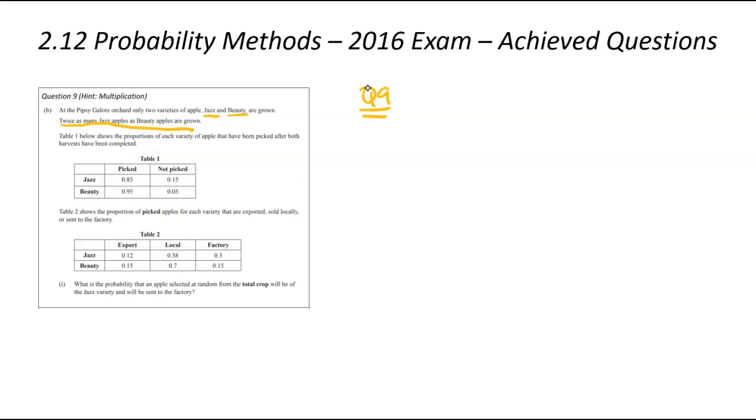We've been asked, what is the probability that a randomly selected apple from the total crop will be of a jazz type and be sent to a factory? You probably could use a probability tree in this question, but I'm just going to do it a different way. The hint I've given us is the multiplication one. So, what we're trying to do, we're trying to find the probability that an apple is a jazz apple and it ends up in the factory. When you've got a combination of events, like we do in our trees, we multiply across each of the events.